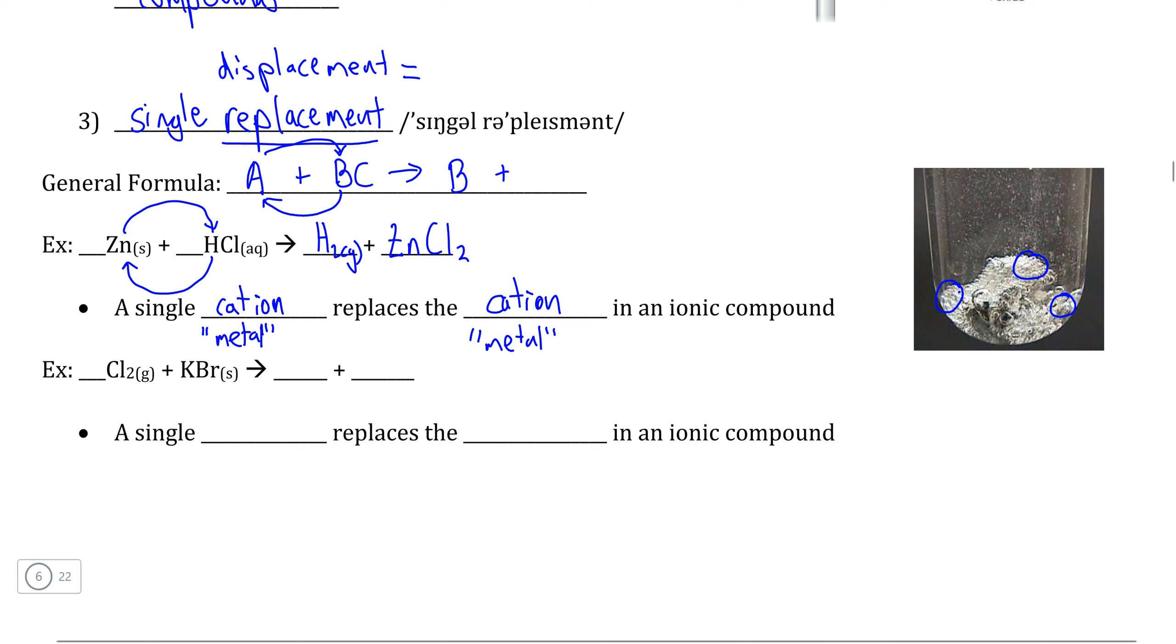And then, of course, we have our second compound, which is AC, produced when A replaces B, like so.